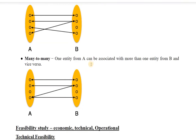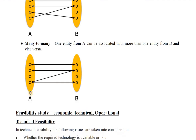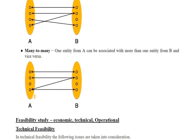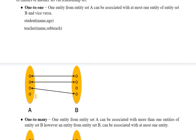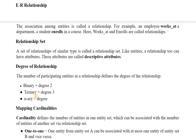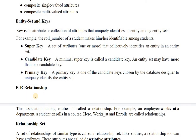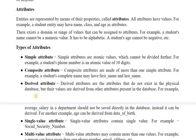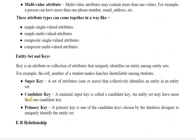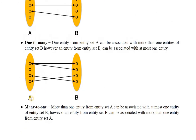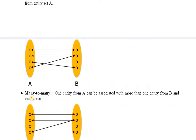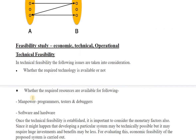Many-to-many relationship means one entity from A can be associated with more than one entity from B, and vice versa. This was the ER data model, through which we represent the relationships among data — where data is known as the entity, and the values associated with that entity are known as attributes.